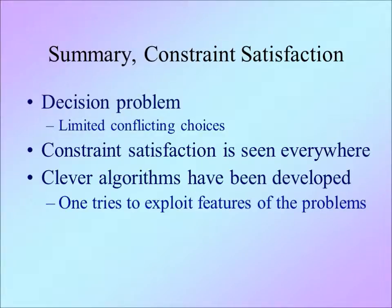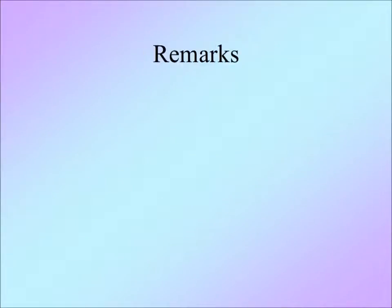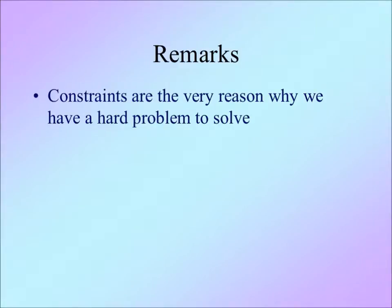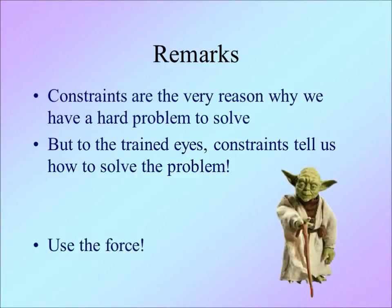Constraint satisfaction is a big business, although people don't necessarily realise it. To summarise: constraint satisfaction is a decision problem. You have limited choices, but the choices often conflict with each other. Constraint satisfaction is ubiquitous, and how clever an algorithm matters. Just a final remark: if there were no constraints, any decision would be as good as any other, which means solutions are easy to find. So constraints make the problem hard to solve. However, to the trained eyes, constraints also guide us to solutions. Training in constraint satisfaction teaches us how to use the constraints.